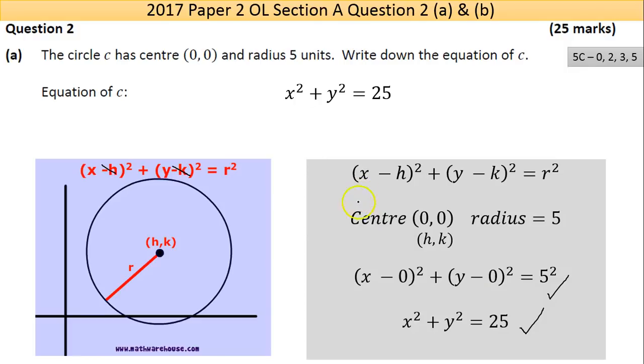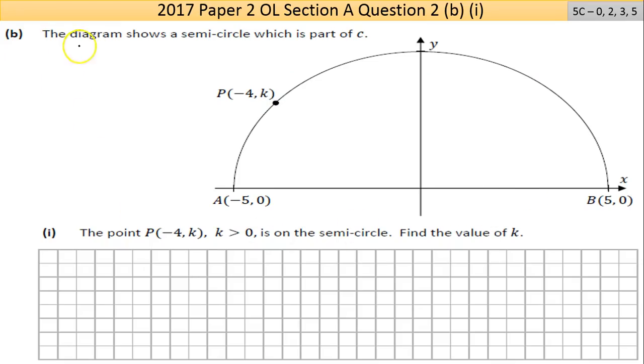Now part B here. The diagram shows a semicircle which is part of C, so you have a semicircle there. It's five units away from the center, radius of 5. If I figure that, I would put in radius equals 5 - that should warrant you at least some marks. The diameter then is ten. Five and five is ten.